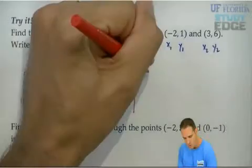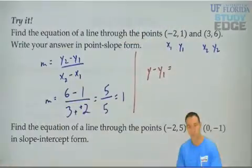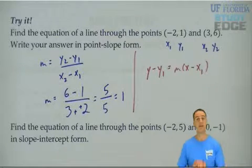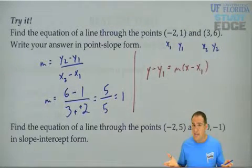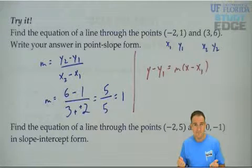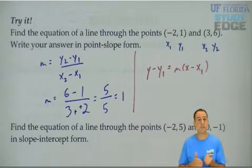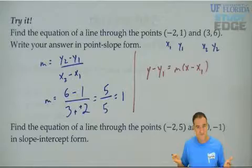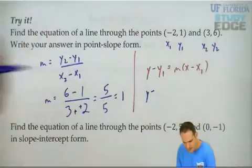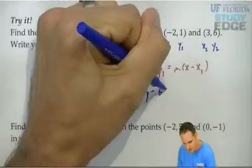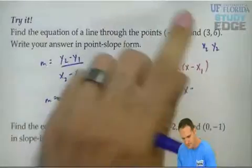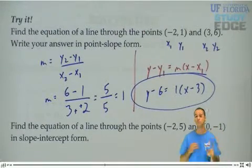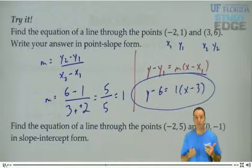Now we do point slope form. y minus my y coordinate equals mx minus my x coordinate. It doesn't matter which point I choose. If you just want the answer in point slope form, pick the first point or the second point. It's up to you. I'll pick the second. y minus my y coordinate equals mx minus my x coordinate. And if you got a different answer, post it on the wall. We can see how it's the same exact equation, just written in a different form.